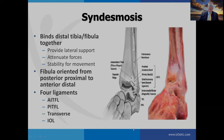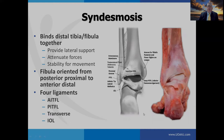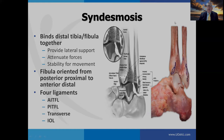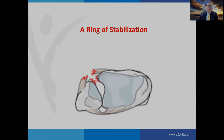The syndesmosis has four main ligaments: anteriorly, the anterior inferior tib-fib ligament; posteriorly, the posterior inferior tib-fib and the transverse ligament; and within the incisura, at the termination of the interosseous membrane, is the interosseous ligament. The incisura is concave on the tibia and convex on the fibula. Vessels and nerves come into this recession, and it's filled with cobweb-like ligamentous attachments. All these ligaments together provide a ring of stabilization for the distal tib-fib joint.